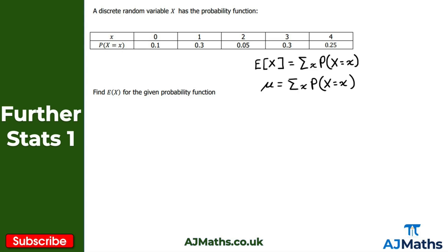If you take a set of observations from a discrete random variable, you can find the mean of those observations. As the number of observations increases, this value will get closer and closer to the expected value of the discrete random variable. That's important to keep in mind.